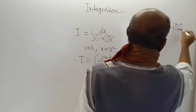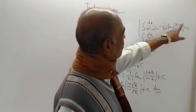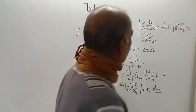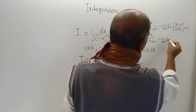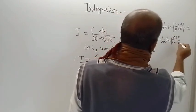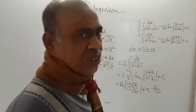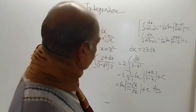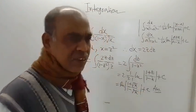For this, the integration is 1 by 2a log x minus a mod, of course mod sign is there, 1 by 2a log of x minus a by x plus a plus c. And here there is a little change: log of a plus x by a minus x plus c. That is a small change in the formula. So this form we have used here to get the desired result.